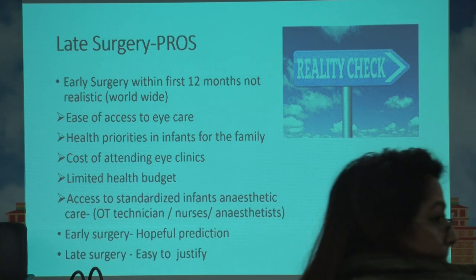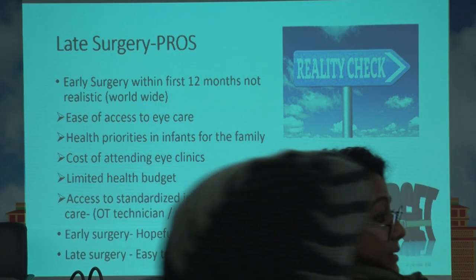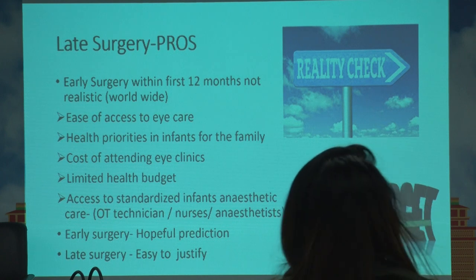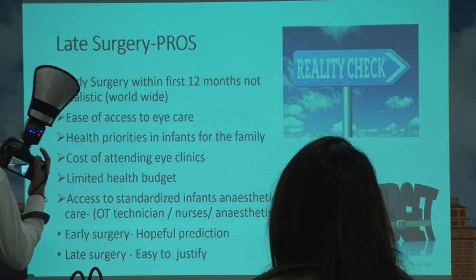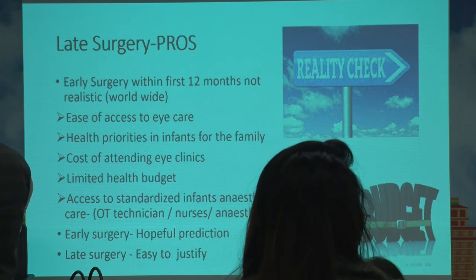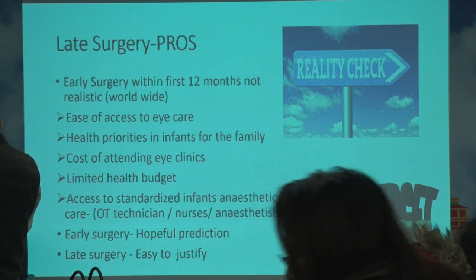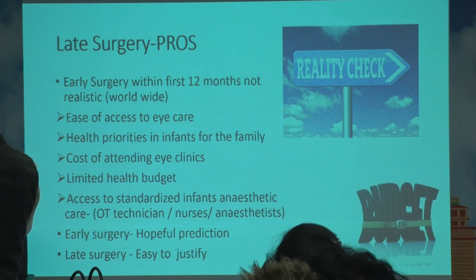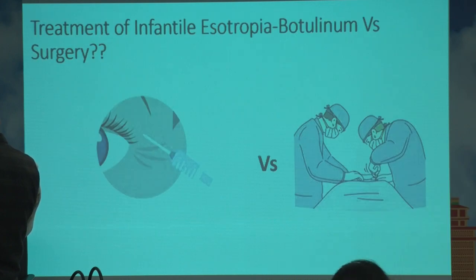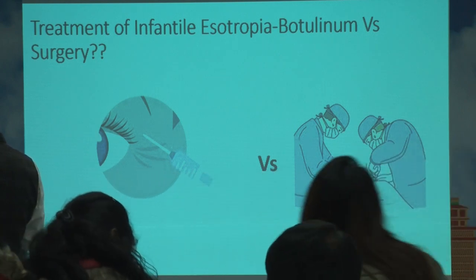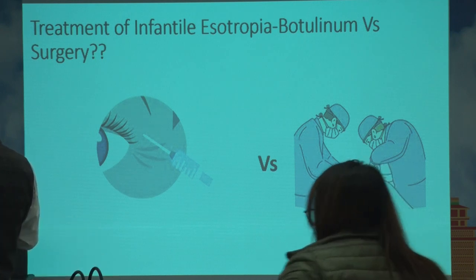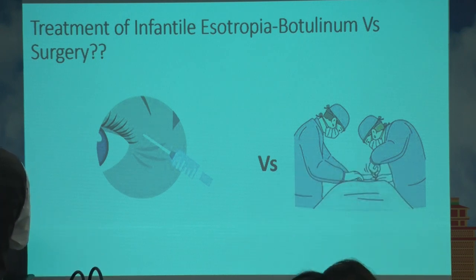As a pediatric ophthalmologist, I am a proponent of early surgery. If I am able to give even gross stereopsis, I would prefer to go ahead with early surgery. Late surgery is easy to justify from the parent's and anesthesia point of view, but if we are going for consensus, I would take the opinion of the panelists later. If you are able to operate before the age of one year, that would be better to attain at least some gross stereopsis.